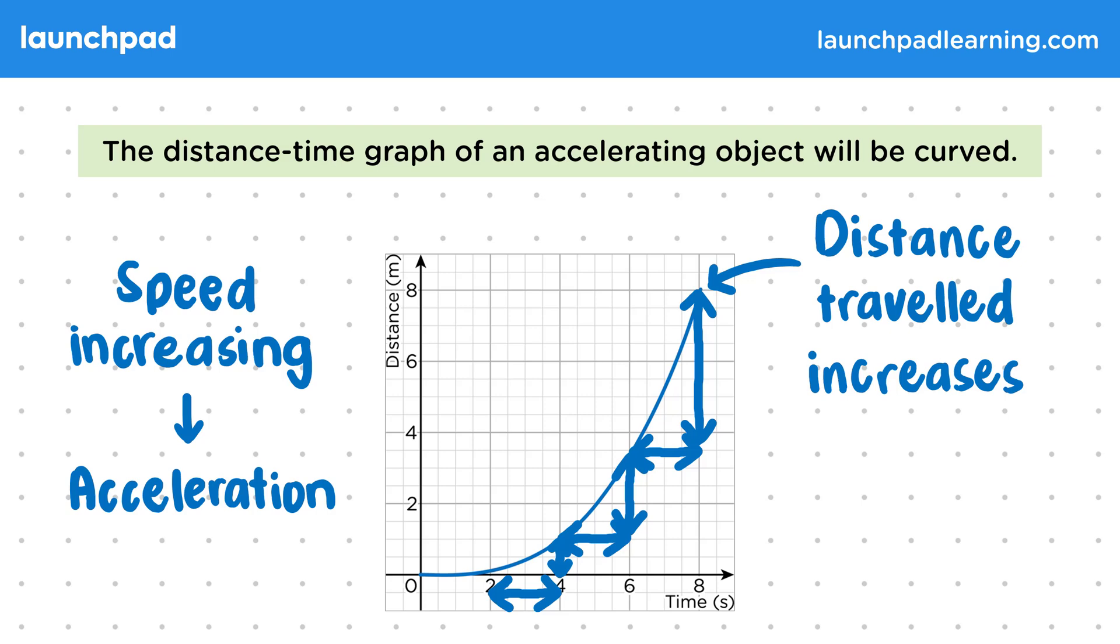We can also have graphs showing a deceleration if it instead curves downwards. For your exam, you need to be able to describe how a changing gradient shows the speed of an object is changing. But if the gradient is changing, how do we calculate a speed from this graph?